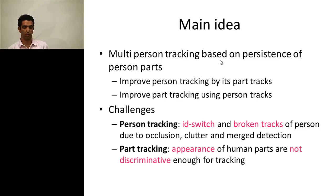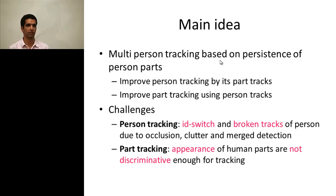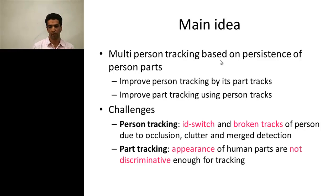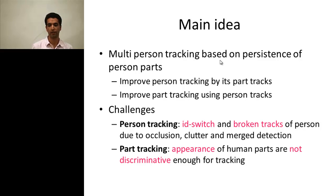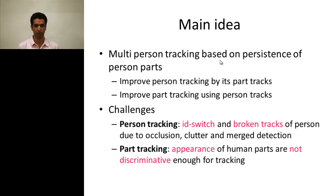For the part tracking, because the appearance of the parts is not very discriminative, we cannot have a very good track of the part. For example, the most discriminative part of the person is the head, and other parts like feet and legs are not very discriminative.